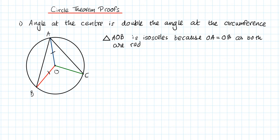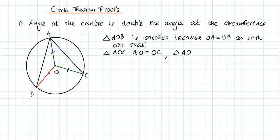Similarly, we can say that in triangle AOC, AO is equal to OC. So triangle AOC is also isosceles.